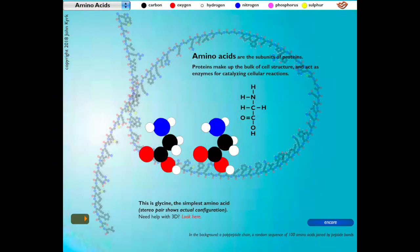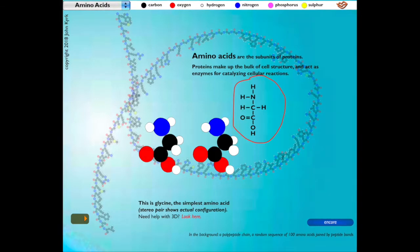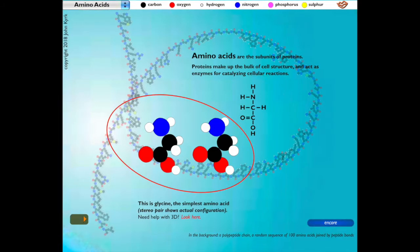Amino acids are the subunits of proteins. Proteins make up the bulk of cell structure and act as enzymes for catalyzing cellular reactions. The structural diagram outlines the bonds between atoms in the amino acid glycine. Next to it, we have a stereo pair for the molecule glycine.